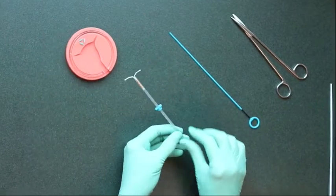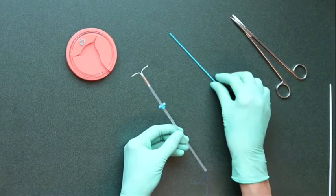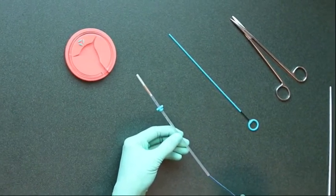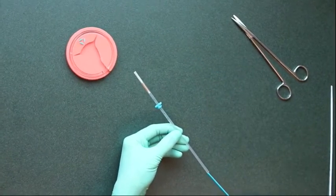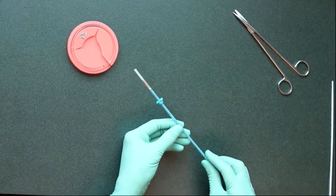Then position the blue flange at the right level. Then pull the IUD into the insertion tube using the blue nylon threads. Then put the plunger into the insertion tube.